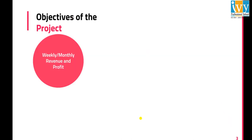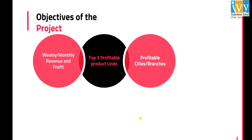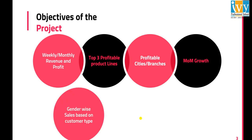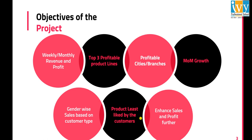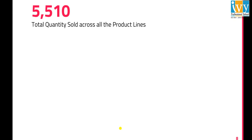The objectives of the project are to analyze weekly and monthly revenue and profit, the top three profitable product lines, profitability across branches, month-on-month growth, gender-wise sales, sales based on customer types, products liked by customers, and to enhance sales and profit further.